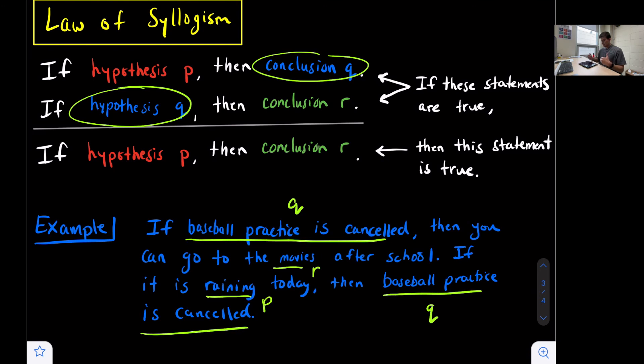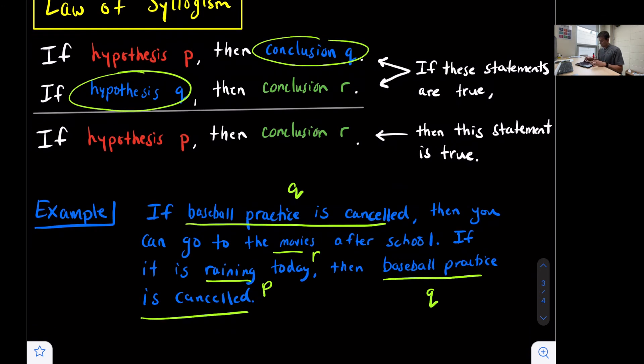And now we can write if P, then R. So P is if it is raining today. So we can say if it is raining today. So if P, then R, then you can go to the movies after school.